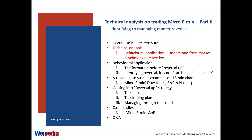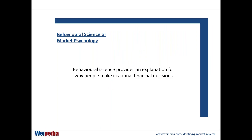When I look at a chart, I'm not just charting the price alone. I'm looking at the behavioral science of human behavior — I always look at charts as behavioral science, which means market psychology. Behavioral science provides an explanation for why people make irrational financial decisions. How do I pick a turnaround or market reversal? The key is I always look for an extreme — whether there's an extreme buy-up representing fear or an extreme sell-down representing greed.